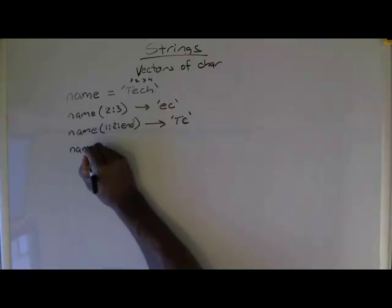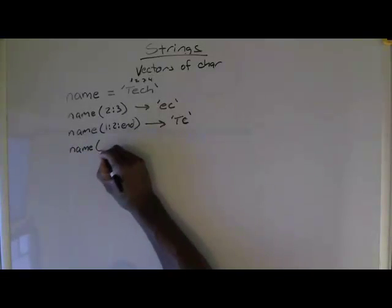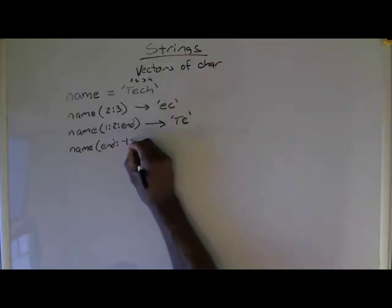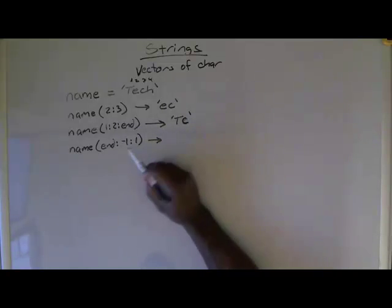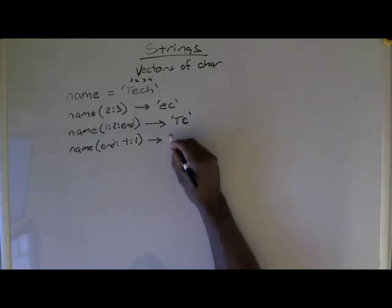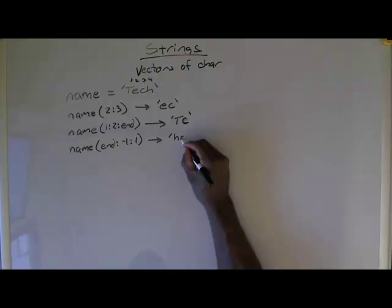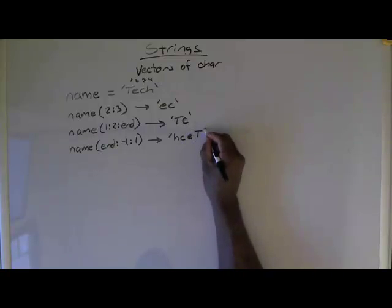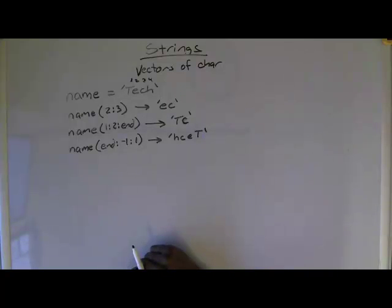If we did name—and this is one you may use often—end:-1:1, that says start at the end and count backwards by a step of 1, and then stop at 1. What you're going to wind up with is the string backwards: H, C, E, T. That's a way you can reverse a string.